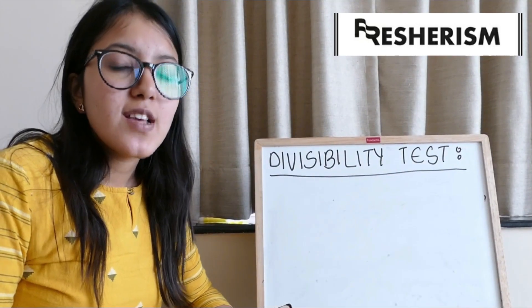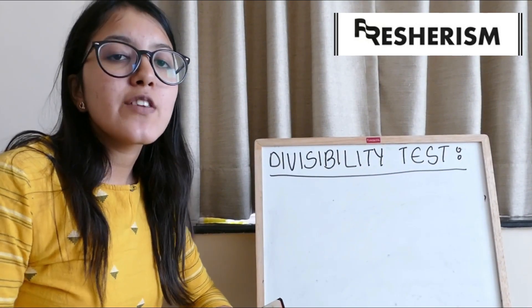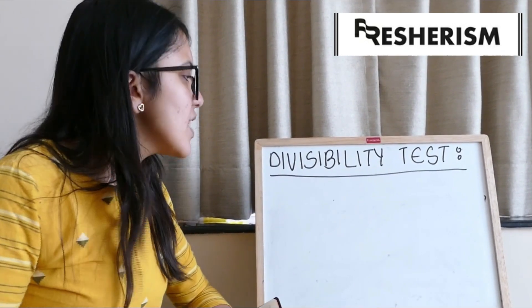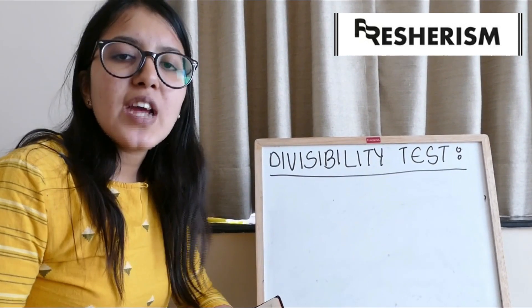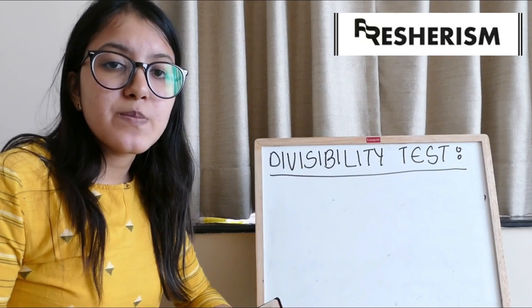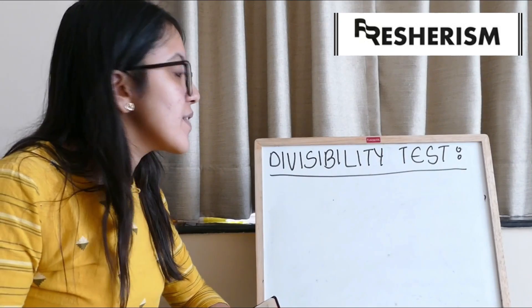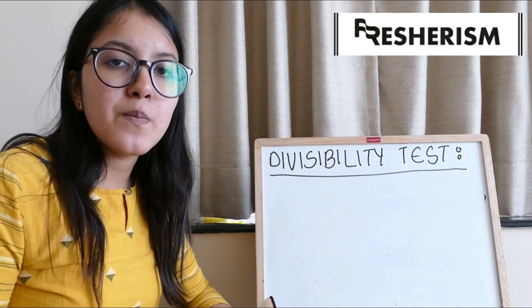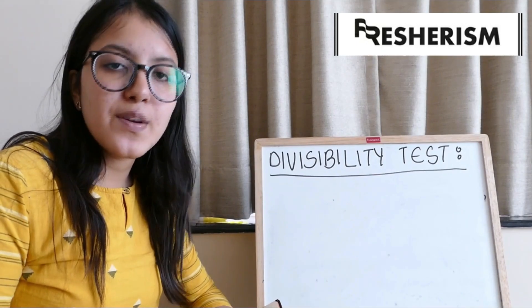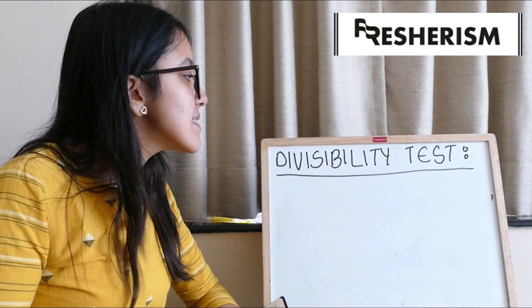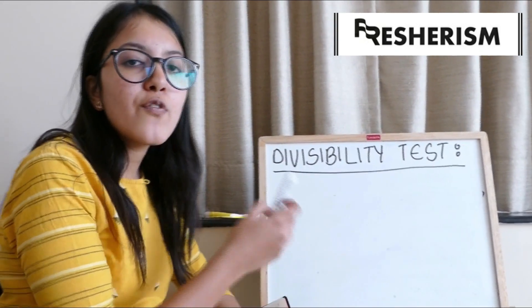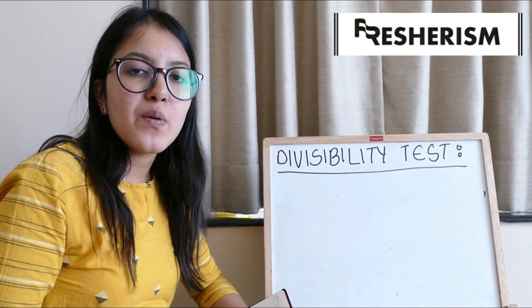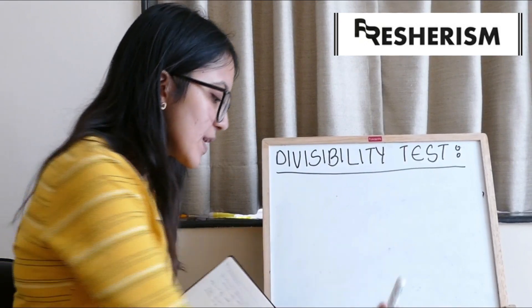In most of the questions, you are expected to multiply and divide numbers from each other. Hence, we will share some simple tricks and tips as to how you can find whether a certain number is divisible by the other number without having to actually divide it. Let us see the divisibility test of all the numbers from 2 to 12 one by one. Let us begin.